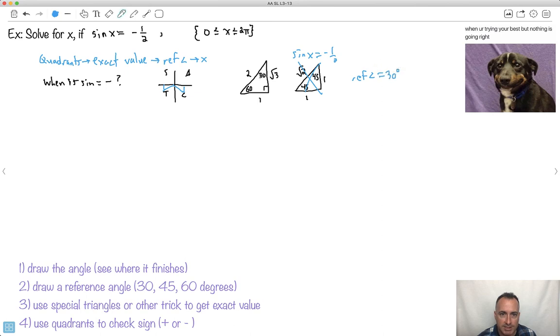Let's guess a reference angle equals 30 degrees. Does that work? Sine of 30 is going to be opposite over hypotenuse of 1 over 2. Hey, it works. So I know my reference angle is 30 degrees. Remember the negative just told me where it was. But the actual value is 1 over 2. So my reference angle must be 30 degrees.